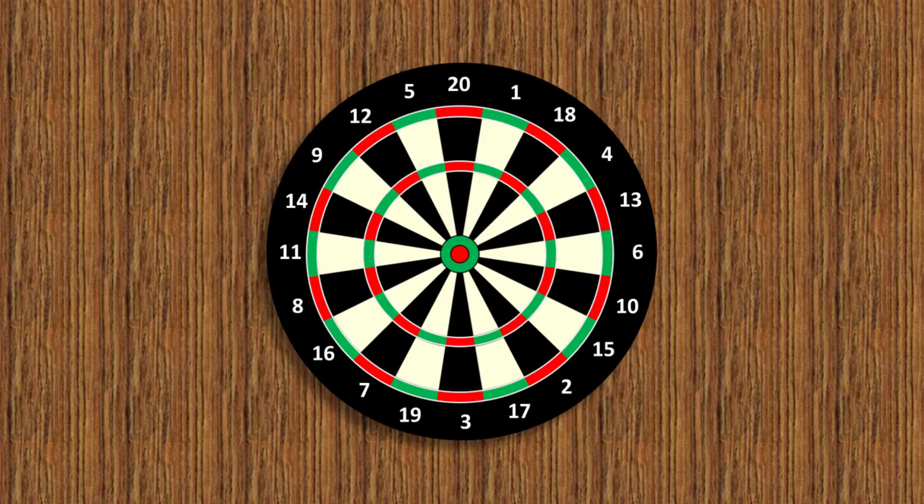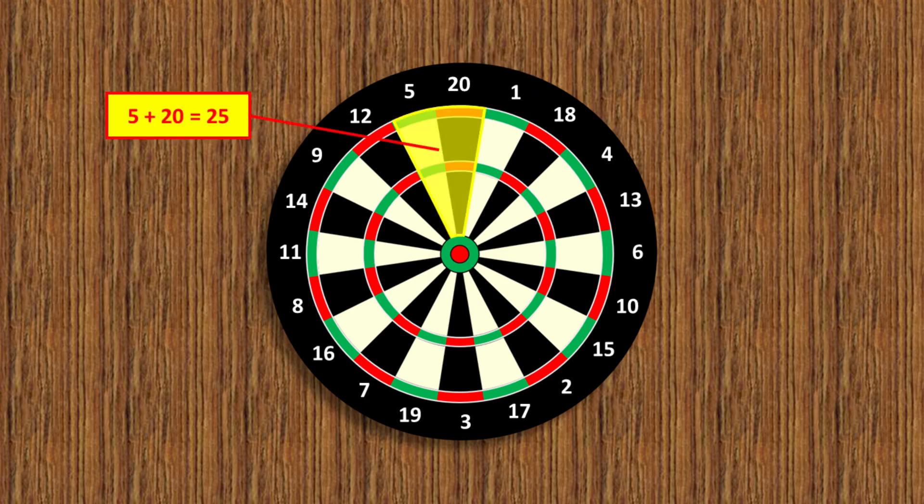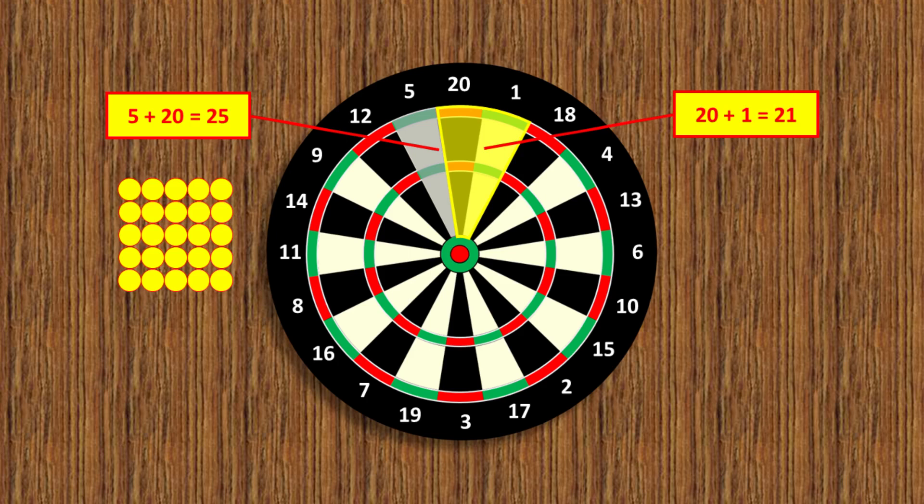Anyway, while looking at a dartboard, the three numbers across the top gave me an idea for a puzzle. What struck me is that 5 plus 20 is a perfect square, 25, 5 times 5, and then on the other side of the board, 1 and 20 add to 21, which is a perfect triangle.